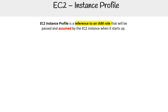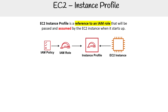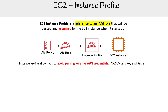An EC2 instance profile is a reference to an IAM role that will be passed and assumed by the EC2 instance when it starts up. The instance profile is really a reference to an IAM role associated with the EC2 instance. The whole purpose is to avoid passing long-lived credentials, so you don't have to hard-code or somehow pass your access key and secret into your OS environment.